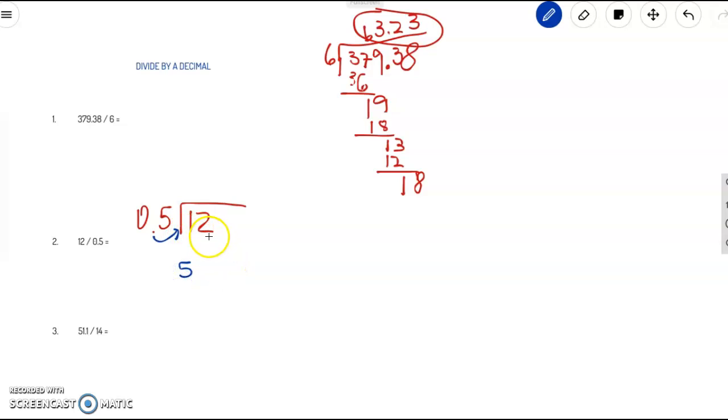Now we are going to do the same thing here. Remember that if it looks like there is no decimal in a number, it is actually hiding in the end of the number. So we are going to also move it to the right one time. And then here we are going to add 0. So we are actually doing 120 divided by 5, which is a lot easier. How many times does 5 go into 12? 2 times.